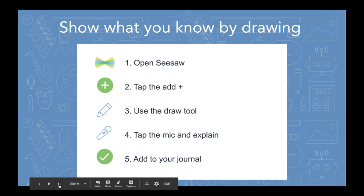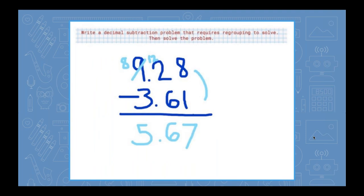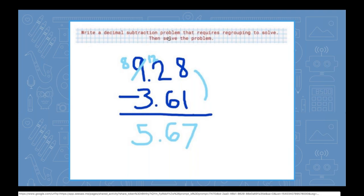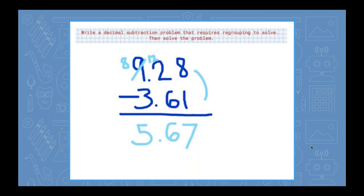Here's an example of a math problem — it's maybe writing more than drawing, but it's using the drawing tool in Seesaw. A student can show what they know by solving a math problem. You can see they've used the label tool to type the problem, and then the student has worked the problem out. You want to have the student click the microphone to explain the steps before hitting the green check mark to add to their journal.